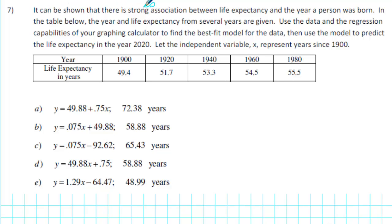It can be shown that there is a strong association between life expectancy and the year a person was born. In the table below, the year and life expectancy from several years are given. Use the data and the regression capabilities of your graphing calculator to find the best fit linear model for the data.